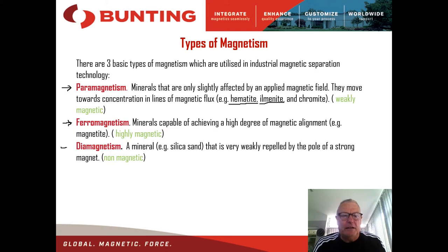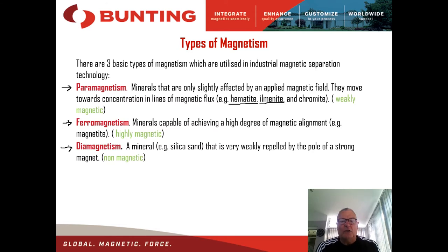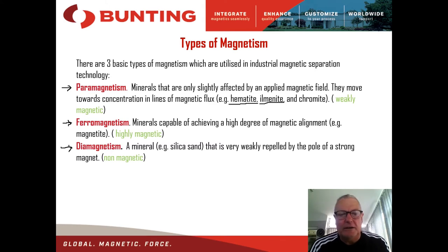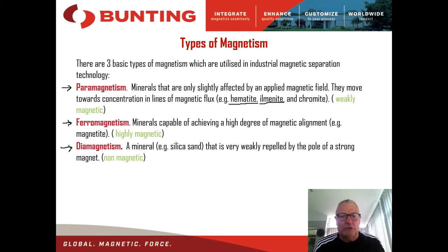The final magnetic behavior we see is diamagnetic materials. These are materials that are essentially non-magnetic in nature. They do not respond to the magnetic field inside our separating zone, so they appear as a non-magnetic material and pass through unaffected by the magnetic field. Examples include silica sands, zircon sands, and rutile.